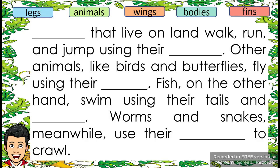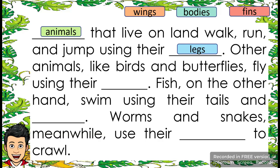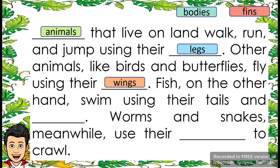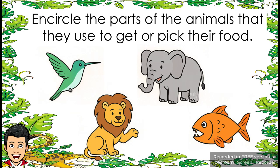Let's answer. Animals that live on the land walk, run, and jump using their legs. Other animals like birds and butterflies fly using their wings. Fish, on the other hand, swim using their tails and fins. Worms and snakes, meanwhile, use their bodies to crawl. Good job, kids.